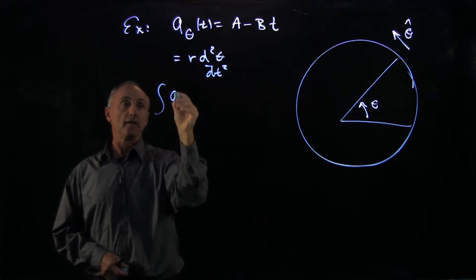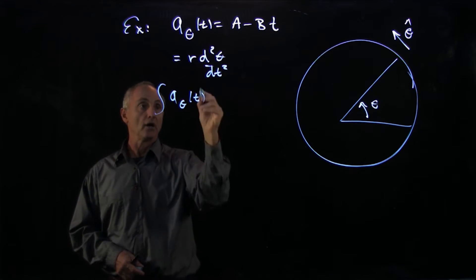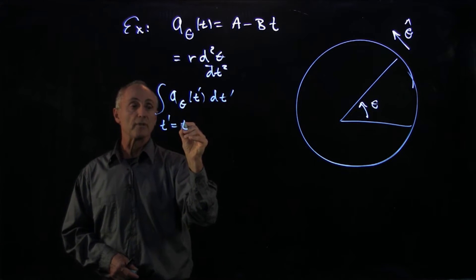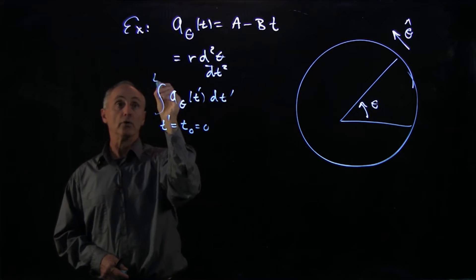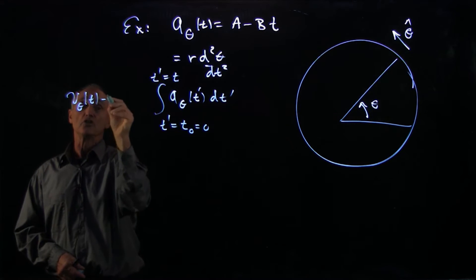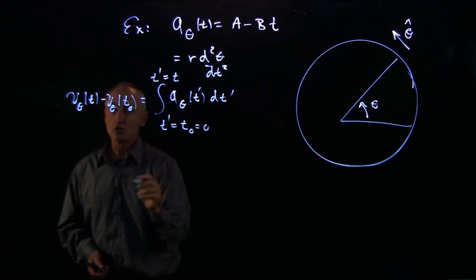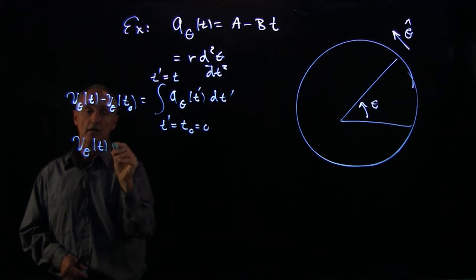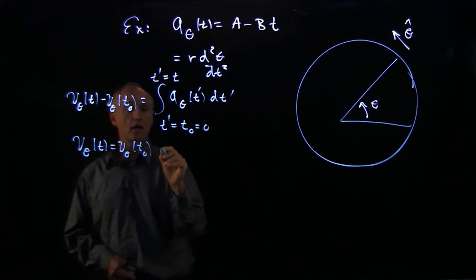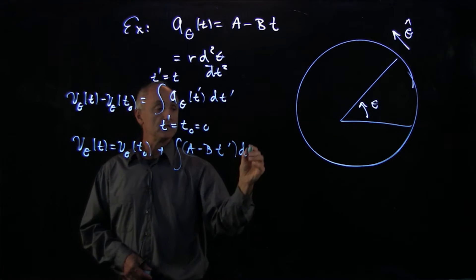So if we integrate the tangential component of the acceleration with some variable from t prime going from some initial value, which we can call 0, to some final value, then that will give us the change in the tangential velocity. So for this case, v_θ(t) is equal to v_θ(t₀), plus the integral of A minus Bt' dt'.